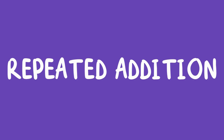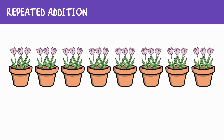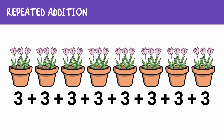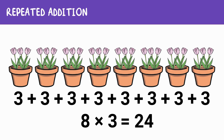Now let's talk about repeated addition — this is where you add the same number again and again. Imagine you have eight flower pots and each pot has three flowers planted in it. Instead of adding three eight times, we could write it out as three plus three plus three plus three plus three plus three plus three plus three. That's a lot of addition! But repeated addition helps us see the connection to multiplication. We can simplify our work by using multiplication instead: since we have eight pots with three flowers each, we can say eight times three equals 24.